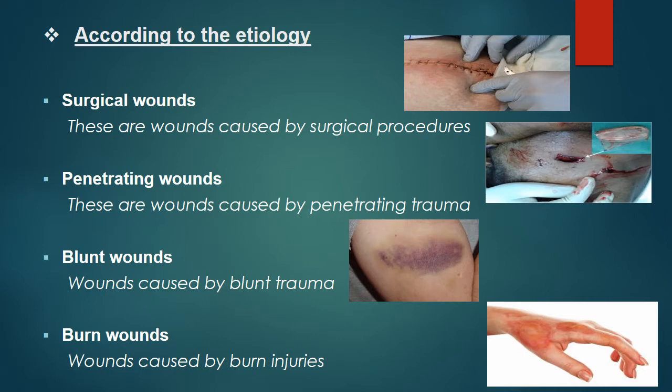According to etiology — meaning origin — there are surgical wounds, which are wounds caused by surgical procedure; penetrating wounds, caused by penetrating trauma such as sharp objects like stabbing; blunt wounds, caused by blunt trauma or hard objects; and burn wounds, caused by burn injuries.